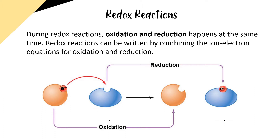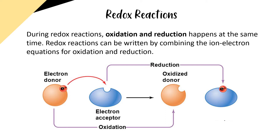Redox reactions can be written by combining the ion-electron equations for oxidation and reduction. The animation on the slide illustrates this: we have an electron donor which gives up an electron and becomes oxidised, and gives its electron to an electron acceptor which is then reduced. That is a redox reaction with oxidation and reduction occurring at the same time.